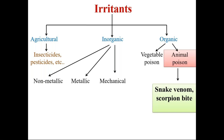Plant poisons — in yesterday's class we have seen about seven plants like Calotropis, Ricinus, Semecarpus, Arum, Abrus precatorius, and so on. So all those things we have seen, and today we will see animal poisons, particularly snake poisons.